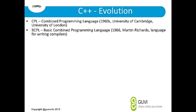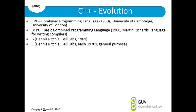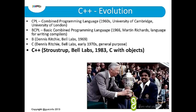Firstly, there was a language called CPL, introduced from the University of Cambridge in the 1960s. After that BCPL was introduced, from BCPL came B, after which C was introduced, and from that came the evolution of C++.